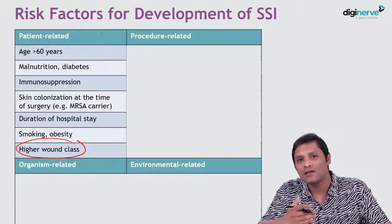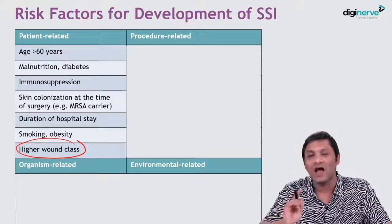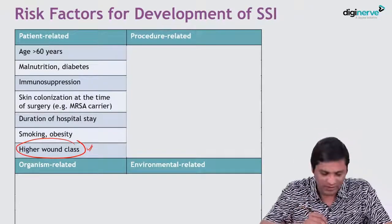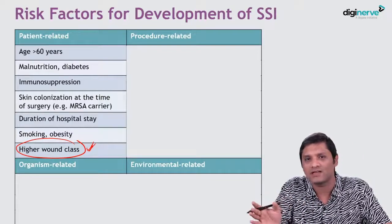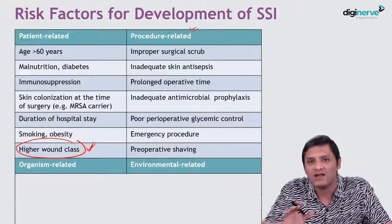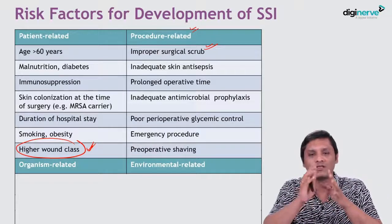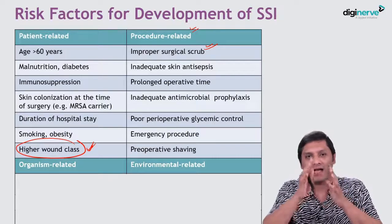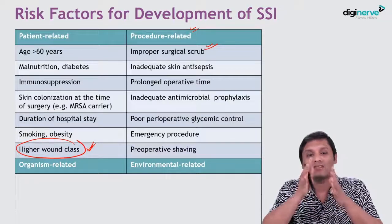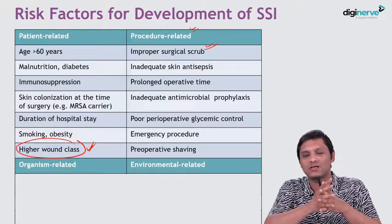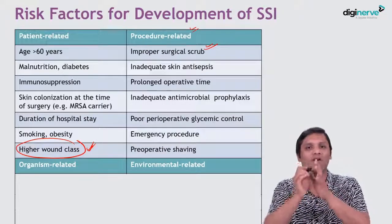Wound classes range from clean to contaminated — higher wound class means higher risk of SSI, which will be discussed in the next slide. Procedure-related risk factors include improper surgical scrub. There are three types of hand hygiene: hand rub, hand wash, and hand scrub. Hand scrub is an extensive procedure with three parts: first, disinfect up to the right elbow; second, disinfect up to the left elbow; third, perform routine hand hygiene cleaning the palm and other areas.